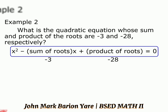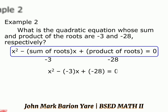We have x squared minus negative 3 times x plus negative 28 equals 0. This simplifies to x squared plus 3x minus 28 equals 0.